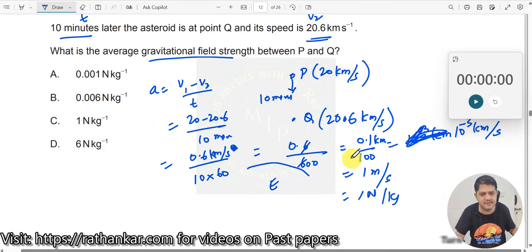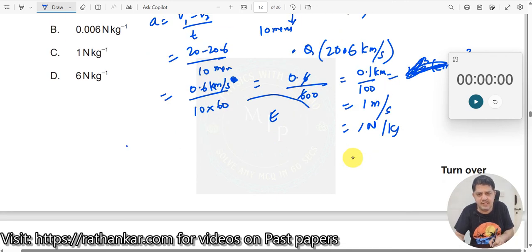How is it 1 Newton per kg? If you ask this question, then you see, force equals m times g over here, right? m times a or m times g, Newton's second law of motion. This g, I am writing this as F divided by m over here.